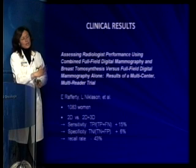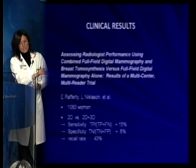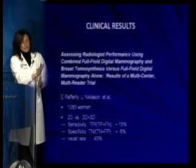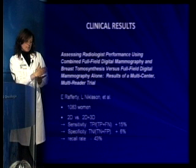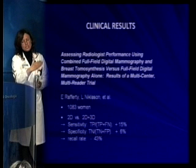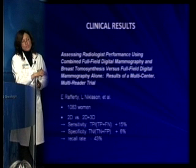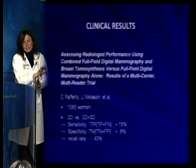We have craniocaudal and oblique views of the breast. Then we inject contrast media and wait two minutes. Then we acquire two images at different energies on the craniocaudal view. Then we wait two minutes again, and acquire two images with different energies — low dose and high dose — on the oblique view. All these images produced after contrast venous injection are reconstructed and subtracted.